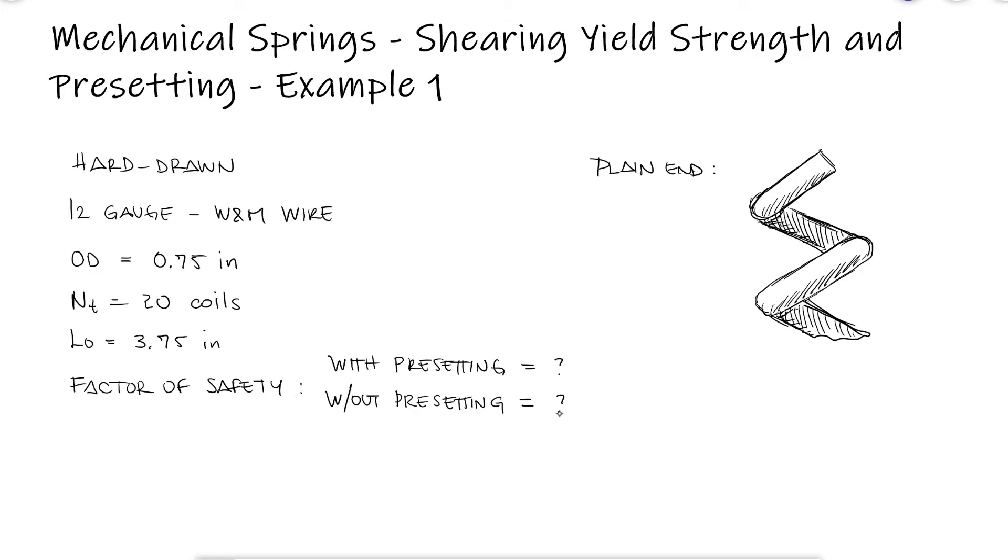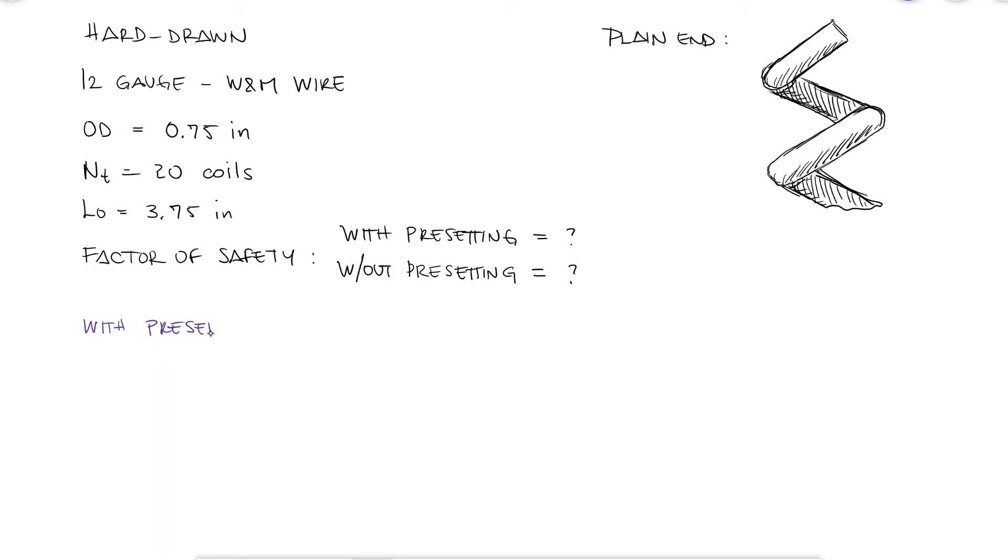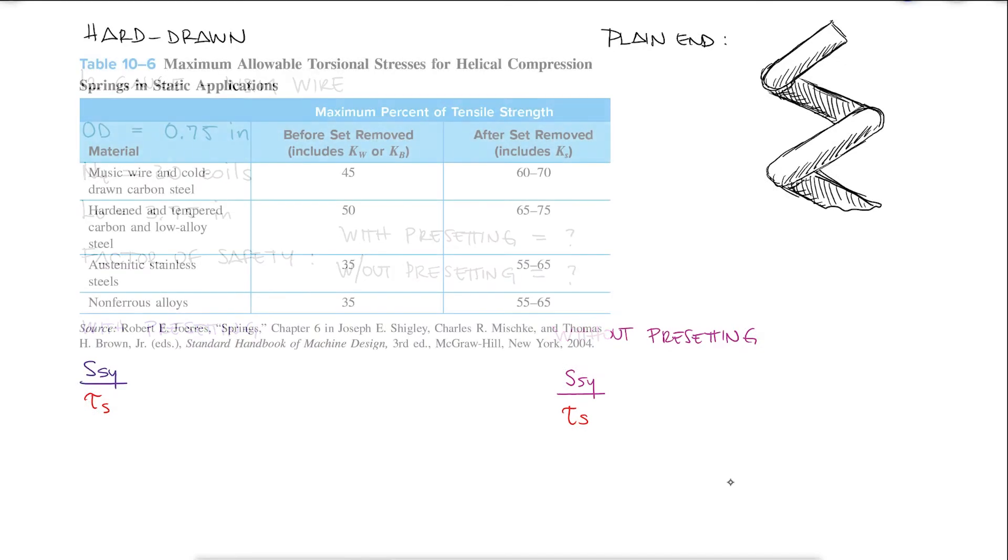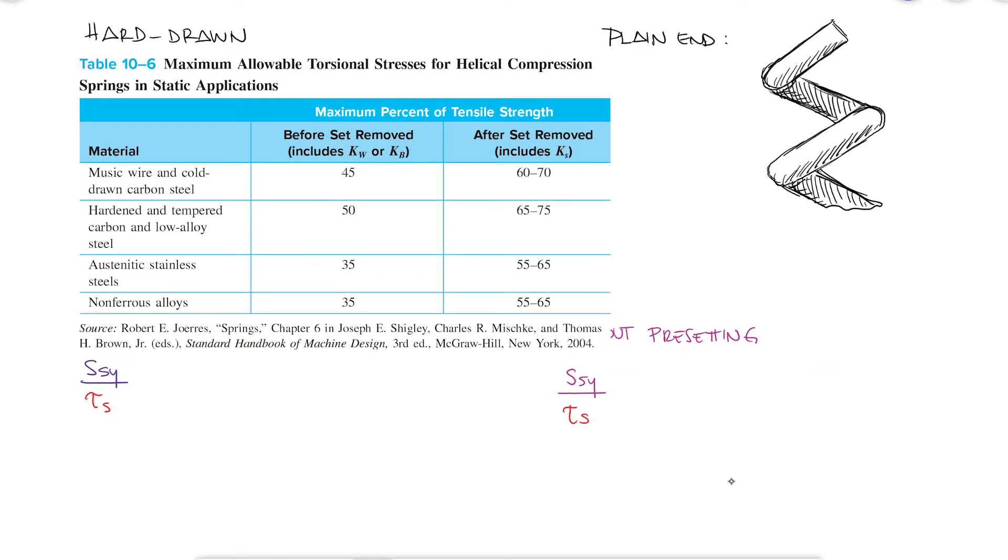The factor of safety for both cases will be the shearing yield strength over the torsional stress that is generated when the spring is compressed to its solid length. For hard-drawn wire, the shearing yield strength will be 45% of the ultimate strength before the preset and 60% after the preset.